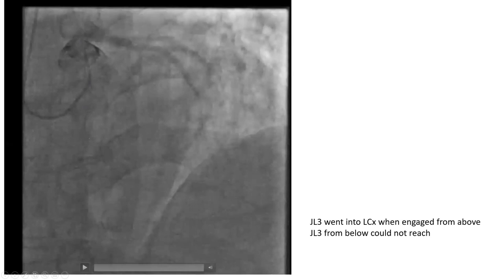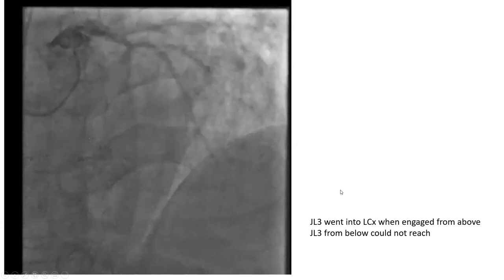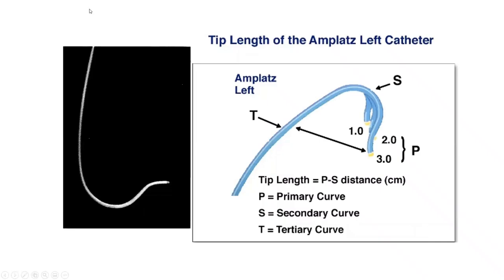So what's the next step when stuck? Remember: whenever you're in a dilemma, the next catheter to think of is Amplatz left — whether right or left coronary, anomalies or grafts. The Amplatz left is a duck-shaped catheter. What characterizes it is a big butt that sits on the aortic cusp and opposite aorta, providing a lot of support. When we say AL1, 2, 3 — the butt is the same; the only difference is the distance between the butt and the primary curve.